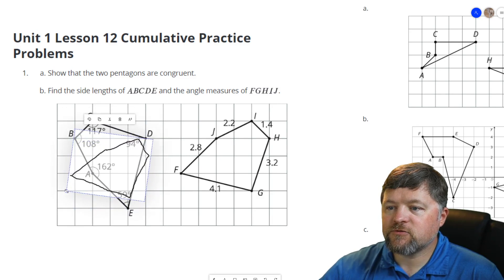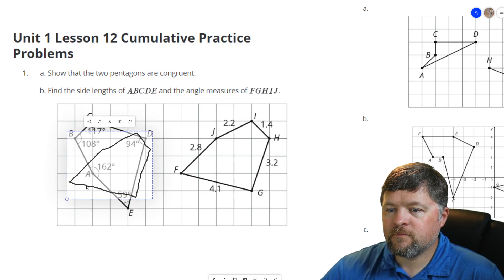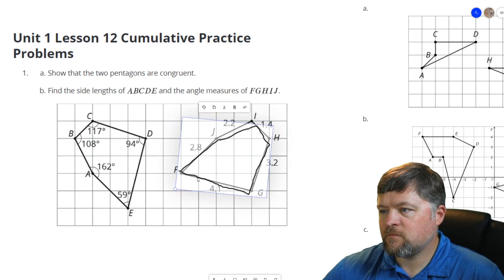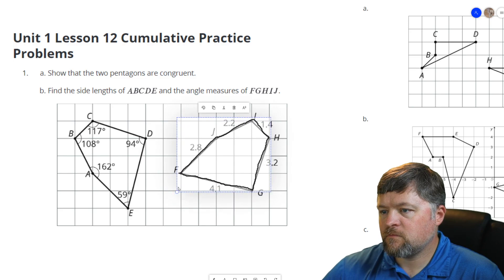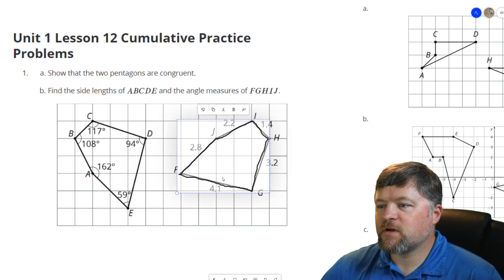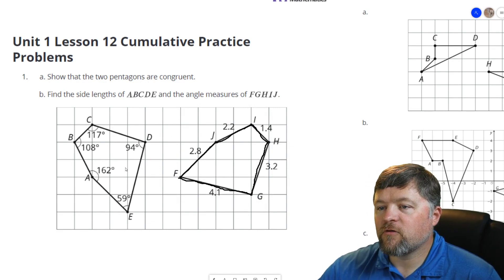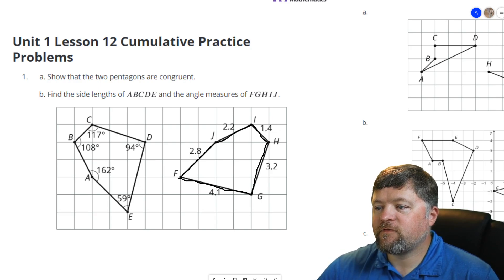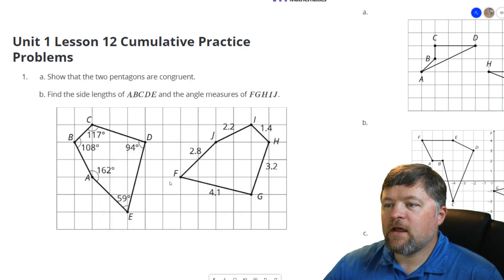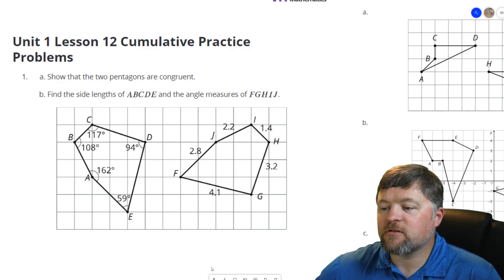So it looks like that was rotated. This gets a little tricky because when I rotate it, it resizes it a little bit, but it does look like a rotation and then a translation takes this figure and puts it onto that figure. Now that we know they are congruent, that means all side lengths and angles have to be congruent to each other. They have to be the same.